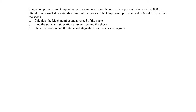In this example we're told we have stagnation pressure and temperature probes located on the nose of a supersonic aircraft traveling at 35,000 foot altitude. And there's a normal shock standing in front of the probe. So let's go ahead and sketch this out.